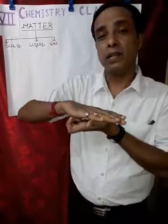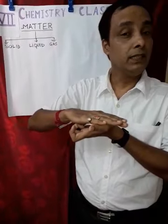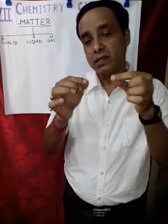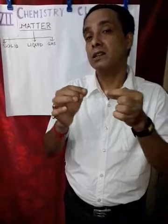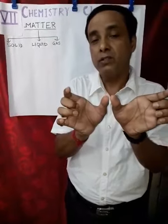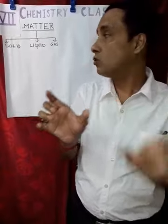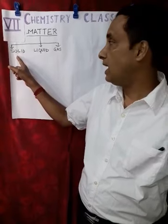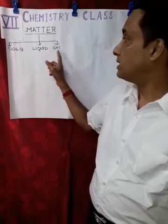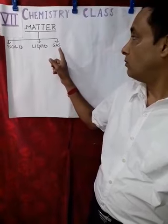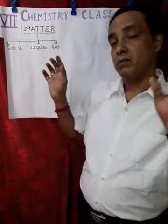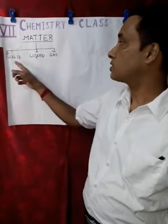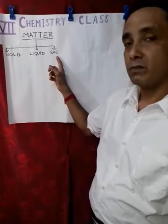Unlike solids, liquids can be compressed but only very little. But gas can be compressed as much as possible. Why? Because in gases, the intermolecular force of attraction between the particles is much less. In the case of solids, the force of attraction is more and the gap between particles is less. But in the case of gases, the force of attraction is much less and the gap between particles is much greater. That's why solids are incompressible and gases are highly compressible.